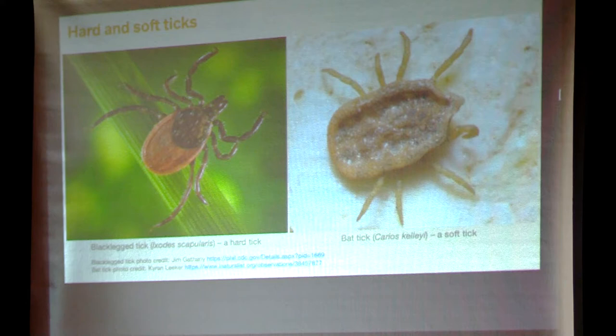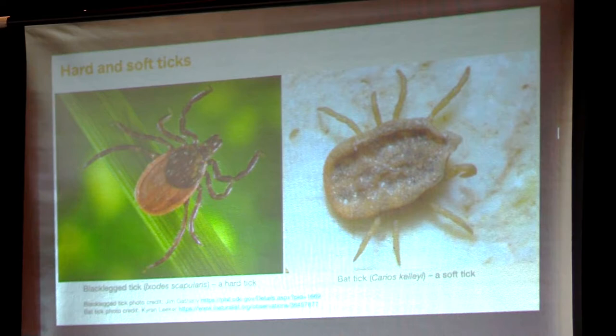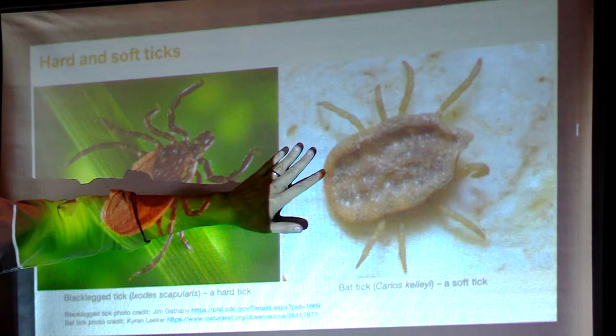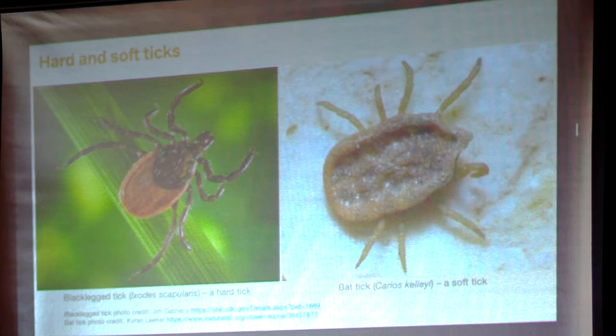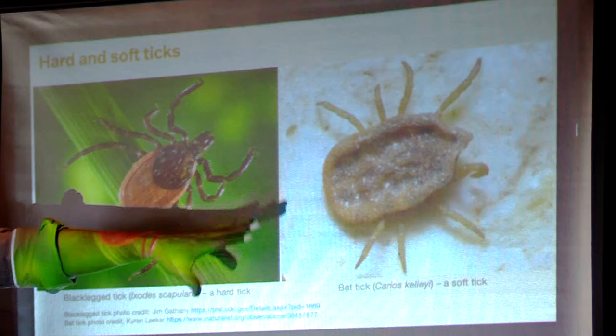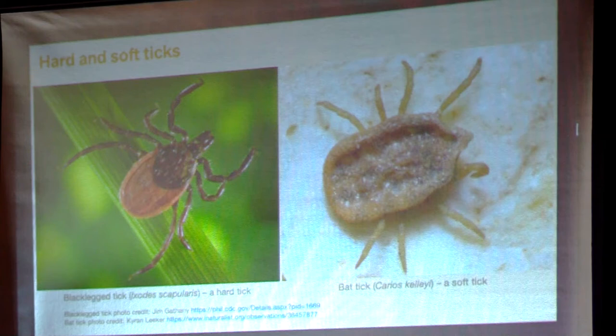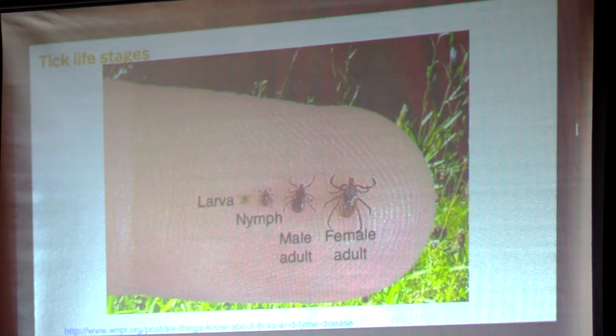The black-legged tick, or deer tick, is a hard-bodied tick with a hard shield on its back. Soft ticks have a more leathery skin and more rarely bite humans, so you don't come into contact with them as much. They have very distinct feeding biology and behavior. Most of what I'll say today applies to hard ticks; I won't be talking much about soft ticks.